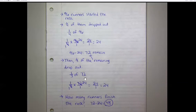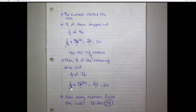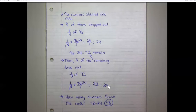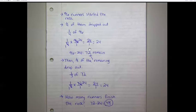Then a third of the remaining 72 runners dropped out — one-third times 72 over 1. Cross cancel because 3 will go into both 3 and 72: 3 divided by 3 is 1 and 72 divided by 3 is 24. 1 times 24 is 24, and 24 over 1 is 24. So 72 minus 24 is 48 — 48 runners finished the race.